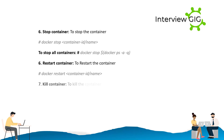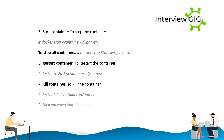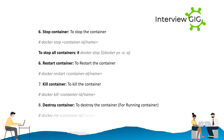Kill container — to kill the container: docker kill <container_id/name>. Destroy container — to destroy the container for a running container: docker rm <container_id/name>.